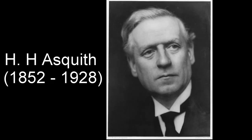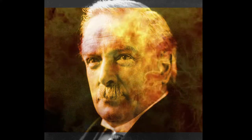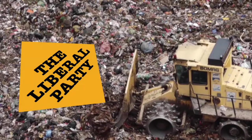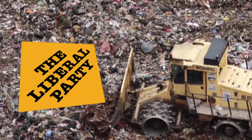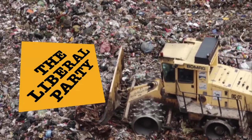By 1917, Lloyd George had overthrown Asquith to become the new Prime Minister. By the time he lost power in 1922, the Liberal Party's days of importance were over.